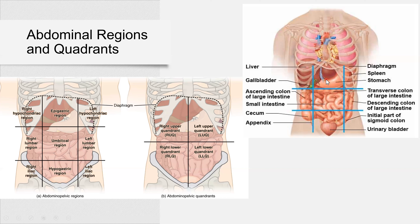If you look at this diagram, you can see the major organs located in those quadrants. For example, the liver is located mostly in the right upper quadrant. The gallbladder is located in the right hypochondriac region. The stomach is mostly in the left upper quadrant. The appendix is in the right iliac region. The urinary bladder is in the hypogastric region, or in terms of four quadrants, it's in both the RLQ and LLQ.